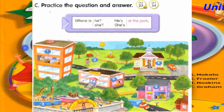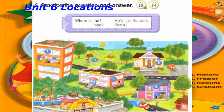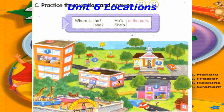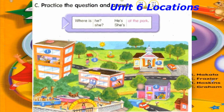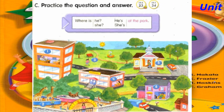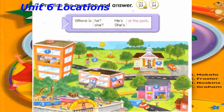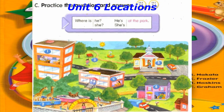Number 5: Where is he? He's at the library. Number 6: Where is he? He's at home.